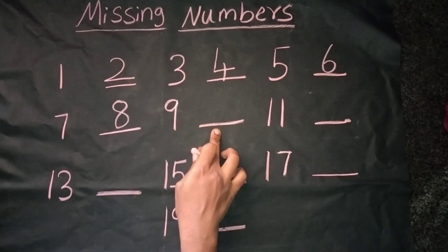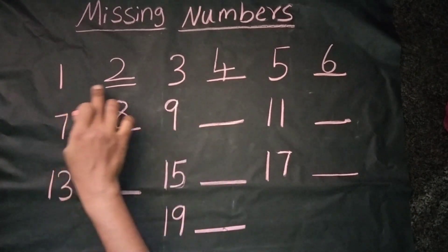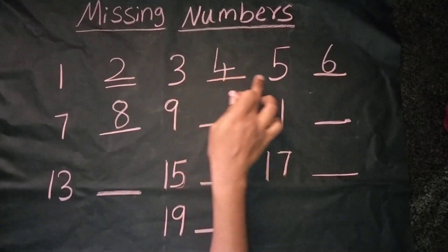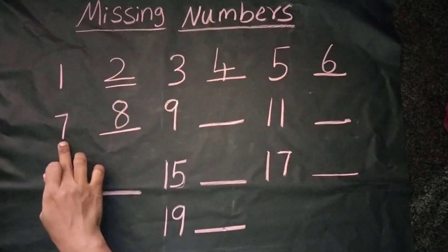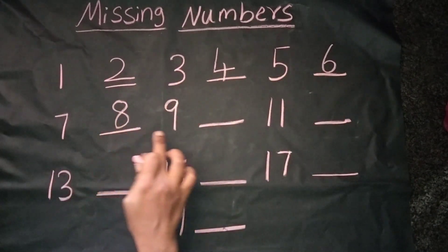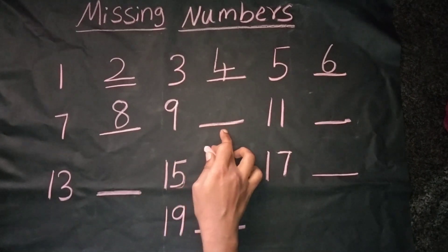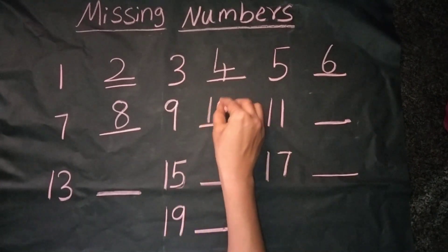The next number is — count from 1: 1, 2, 3, 4, 5, 6, 7, 8, 9, 10. Yes, it's correct. The number is 10.